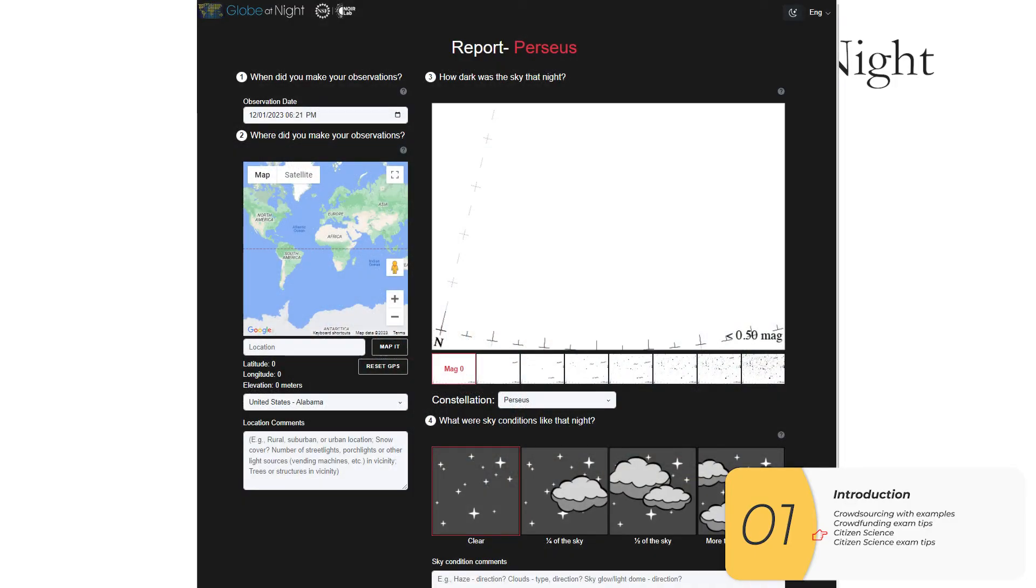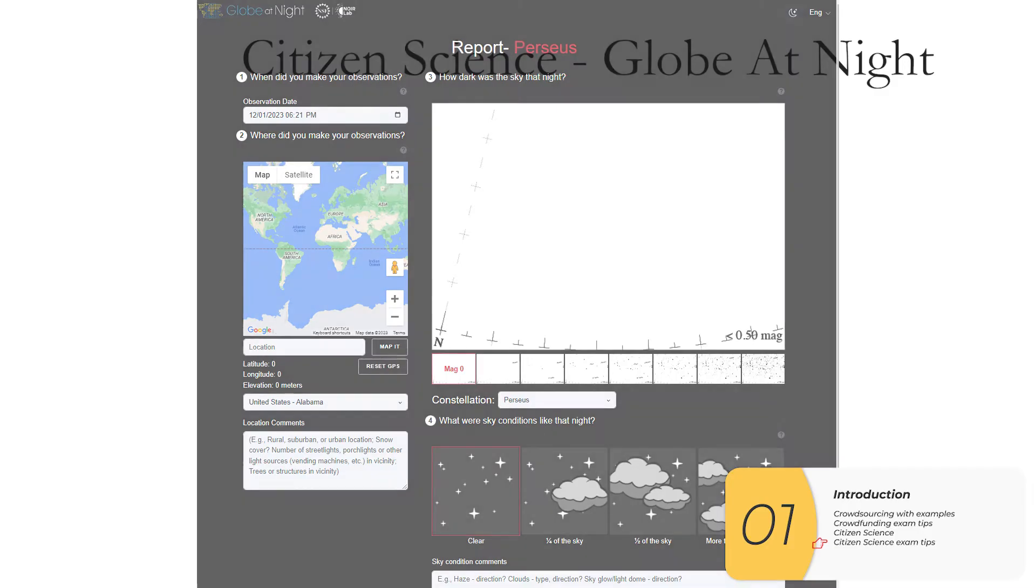And this is how it works. You either on your app or on a computer, fill out your observations of the stars, along with geographical data, time data, meteorological data, that kind of thing, and then scientists analyze that data later.